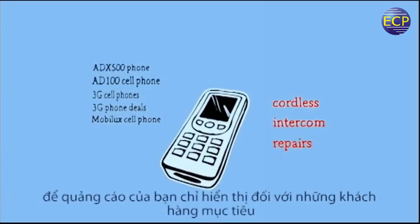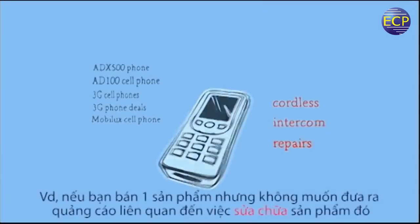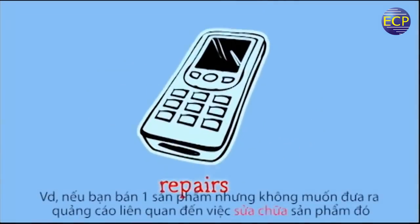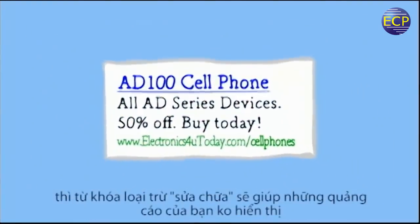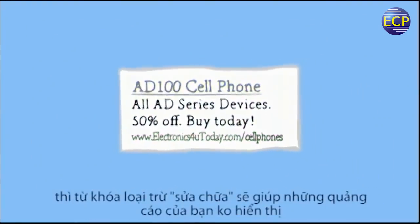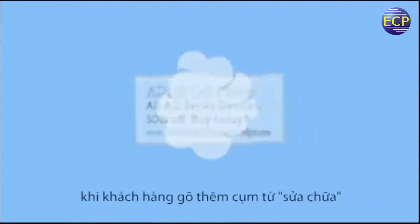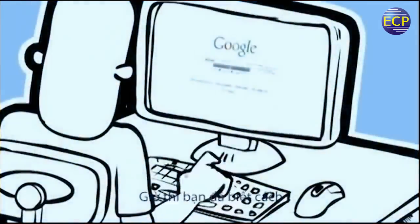One last tip: use negative keywords to refine your targeting. These will stop your ads from showing when you don't want them to. For instance, if you sell a product but don't offer repairs, add 'repairs' as a negative keyword and your ad won't show on any search with that term.